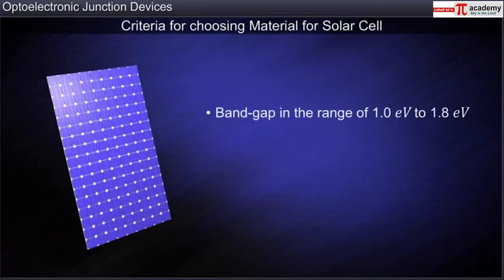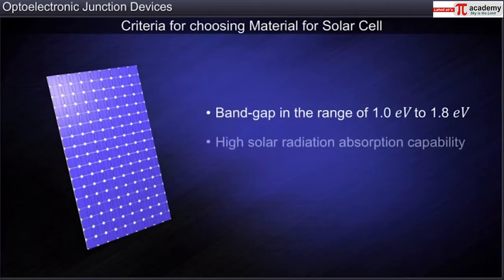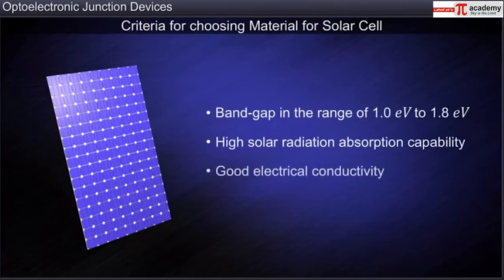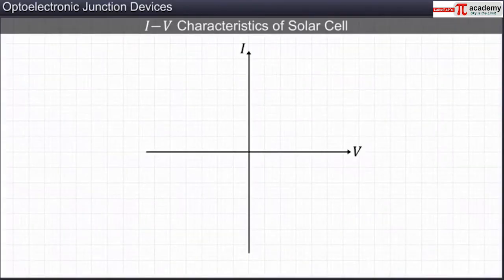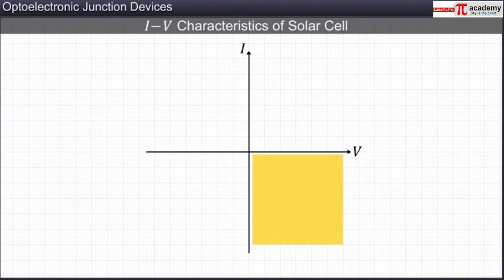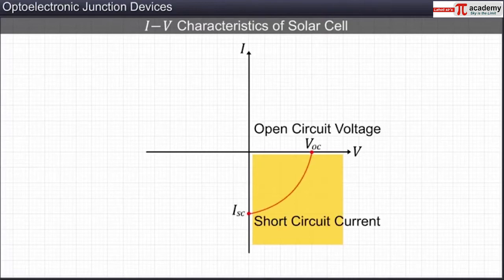Besides band gap, the other criteria for selection of suitable material for solar cells include high solar radiation absorption capability, good electrical conductivity, and ease of availability and cost. Here, we can see the IV characteristic of a solar cell which is drawn in the fourth quadrant, as it does not require any external bias and acts as a source of electricity.